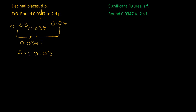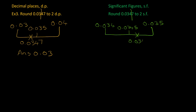Over to the significant figures version. Remember, the zeros at the beginning don't count. So the first significant figure is the 3, and the second is the 4 — so our line goes in there. We start with 0.034, the other end is 0.035, and halfway is 0.0345. Our number is 0.0347, which sits roughly there on the number line, so that rounds to 0.035.